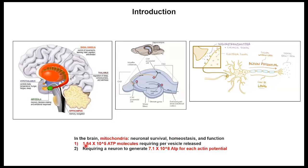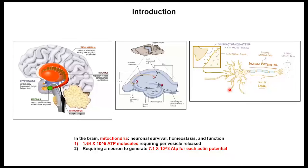Here are the ATP molecules. For one vesicle release in neuronal cells, these neuronal cells require about 1.6 × 10^5 ATP molecules. This is a huge number of molecules for just one vesicle to release to other neurons. Action potentials also need this amount of ATP. Overall, neuronal cells need a lot of ATP, and this ATP is generated by the mitochondria. That's why the mitochondria role is very important in neuronal cells.